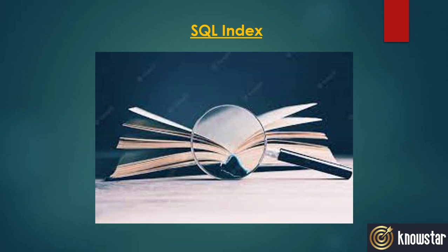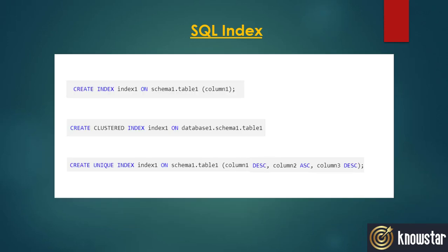Similarly, a database index is built on one or more columns in the table or view. The columns included in the index are called index keys. This index then enables the database to find the row or rows associated with the key values quickly and efficiently.